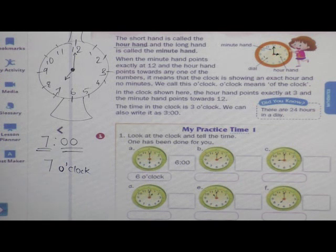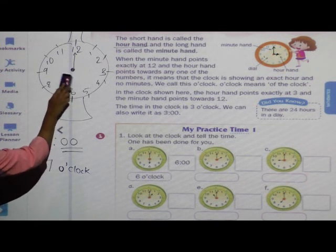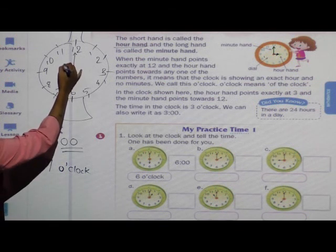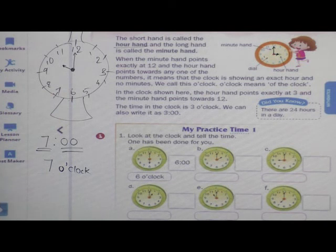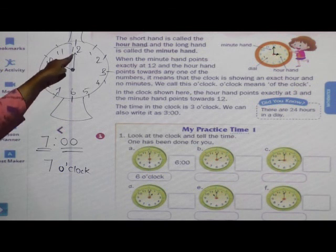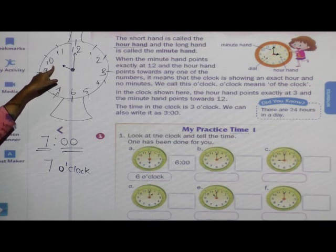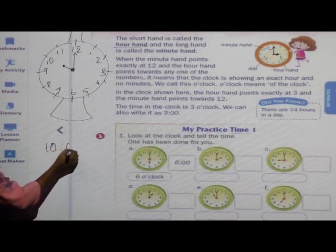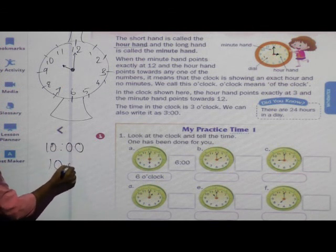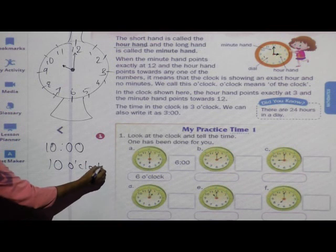Now suppose I take this short hand towards ten. What will be the timing? See, minute hand is at twelve and the hour hand is at ten. So the time is ten o'clock. In this way you can write the time.